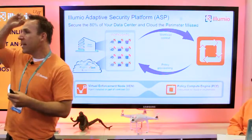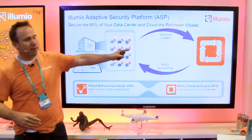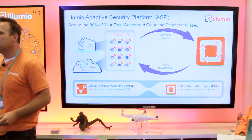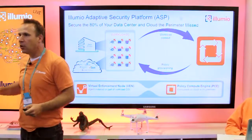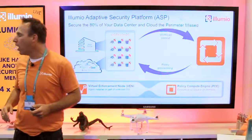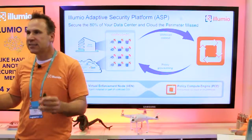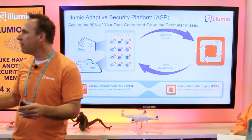When you spin up a workload, the antenna, the VEN, is going to send traffic to this thing on your right, that orange box. It's called the Policy Compute Engine. The Policy Compute Engine is the brains of the operation. It is the newest member of your security staff. It works 24 hours a day, seven days a week, 365 days a year.